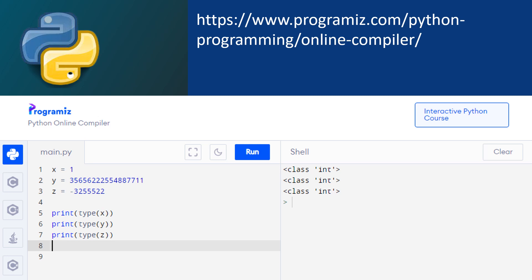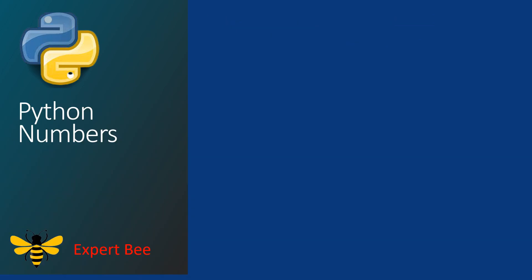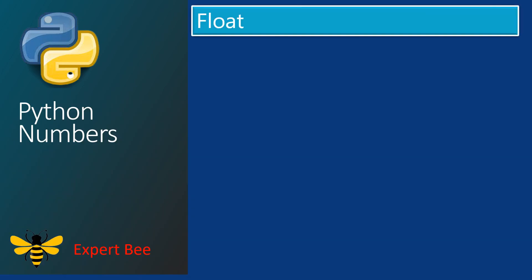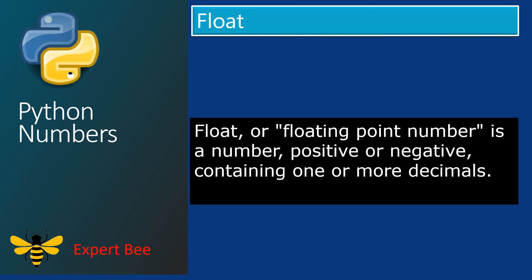This clearly shows that integers are positive numbers, negative numbers, and can be of any length. Now let us look at the second data type, that is the float data type. Float or floating point number is a number, positive or negative, containing one or more decimals.